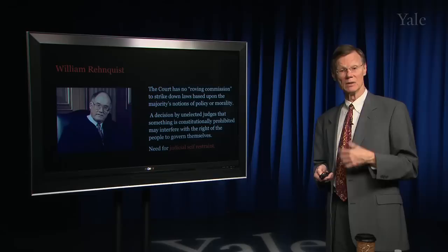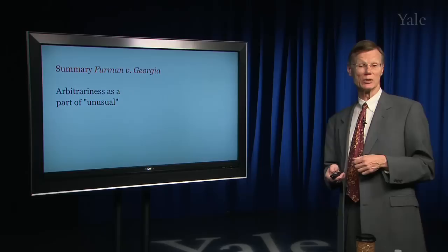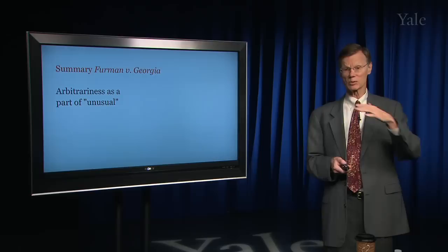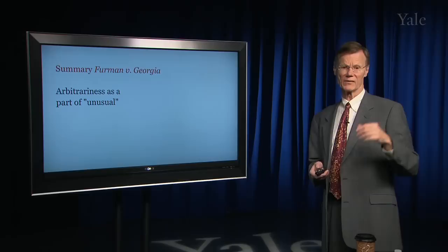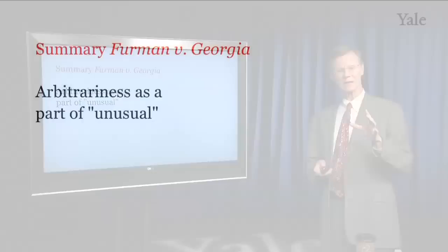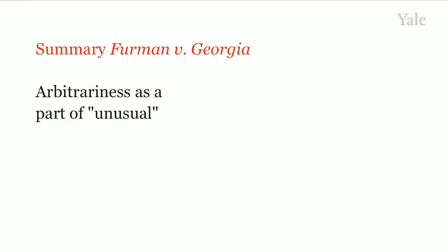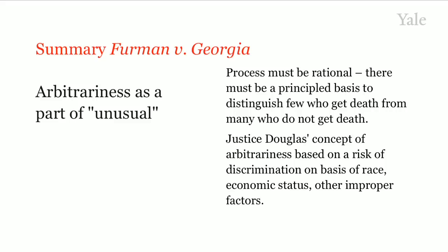The end result was the death penalty declared unconstitutional as applied in 1972. This ended the death penalty for the time being — all approximately 560 people on death row were affected, including those in states beyond Georgia and Texas. From these cases we get the principle that arbitrariness is part of the concept of unusual — the process of imposing the death penalty must be rational, with some principled basis to distinguish the few who get it from the many who do not. Justice Douglas added that any death penalty statute must protect against the risk of discrimination based on race or poverty.